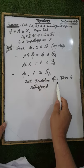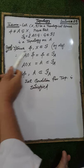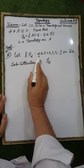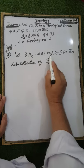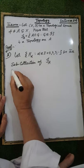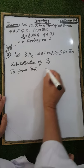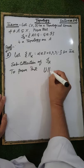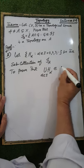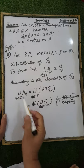Thus the first condition of topology is satisfied. To check the second condition, let {H_α : α ∈ I}, where I = {1, 2, 3, ...}, be a sub-collection of τ_A. We have to prove that the union of H_α over α ∈ I is an element of τ_A.